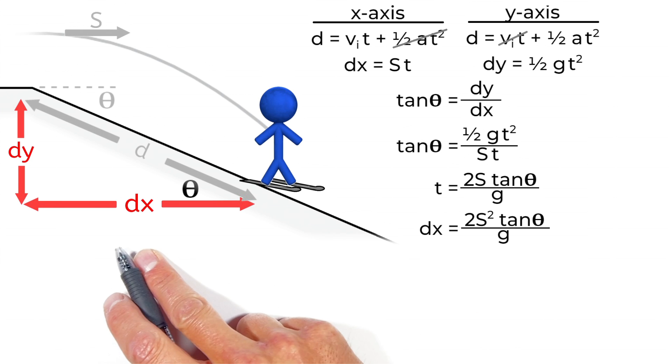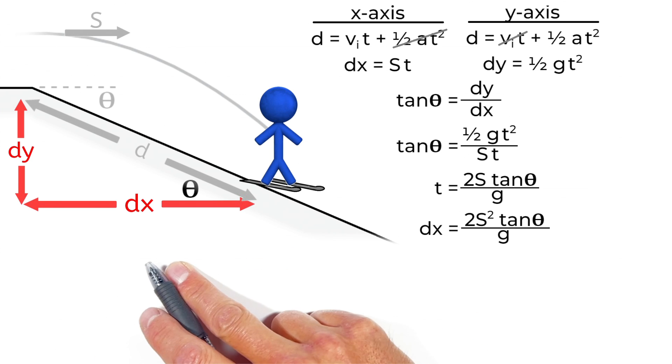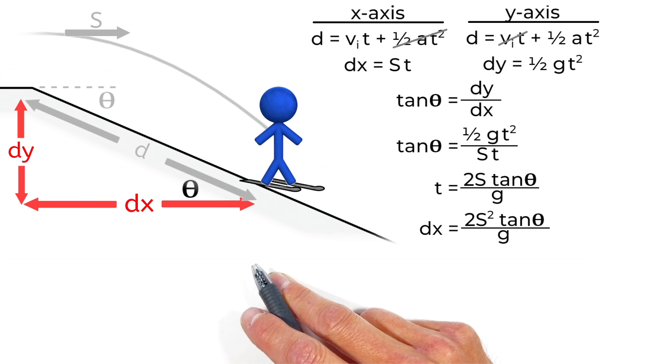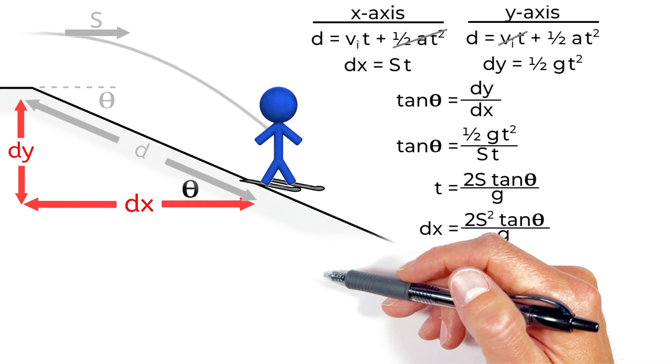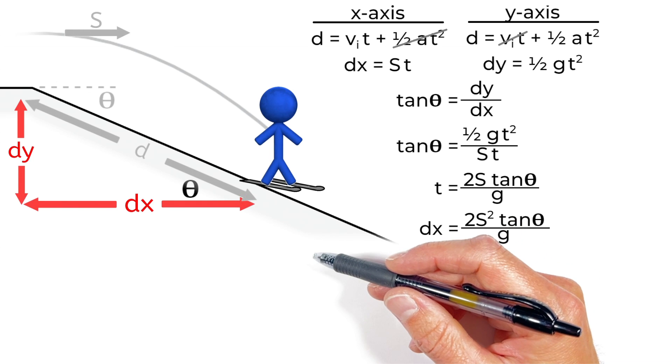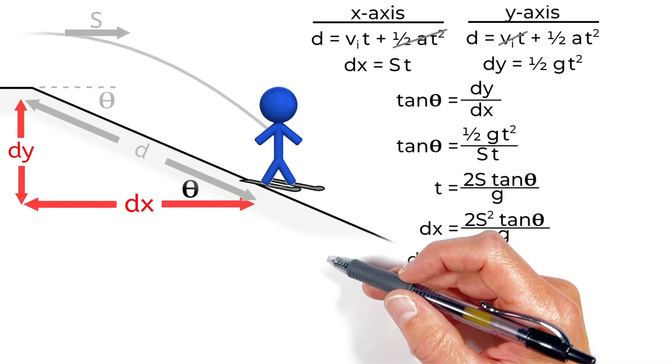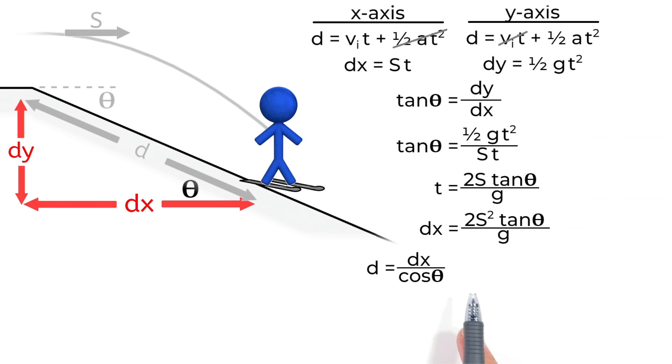Now, that function is a function for this horizontal displacement of the skier. So if we know the horizontal displacement and this angle, we can solve for the hypotenuse here, or really the distance down the hill which the skier is going to land. So if we set d equals the displacement in the x divided by cosine theta, we can solve for the total displacement of this projectile down the hill.